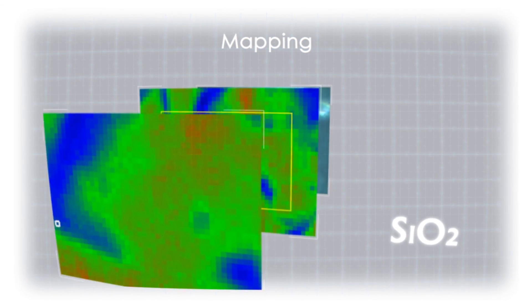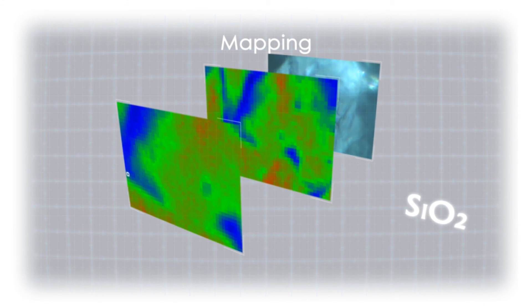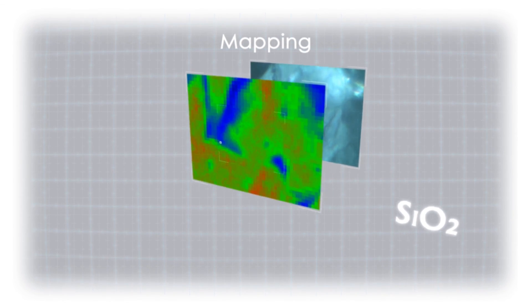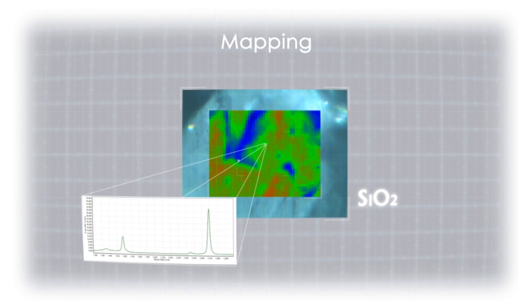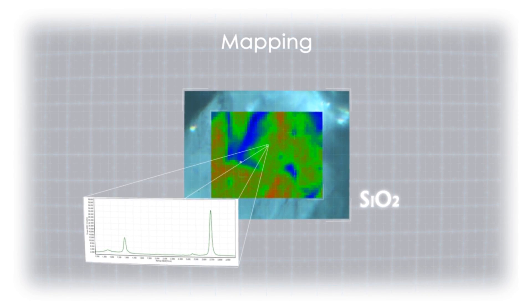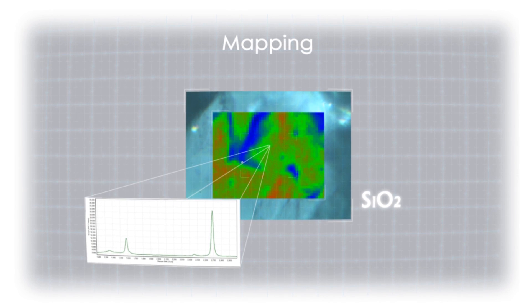In addition, an optional mapping function is available in which users can choose the scanning area themselves and combine Raman and visible live images. Simply point at any site and the specific Raman spectrum will appear.